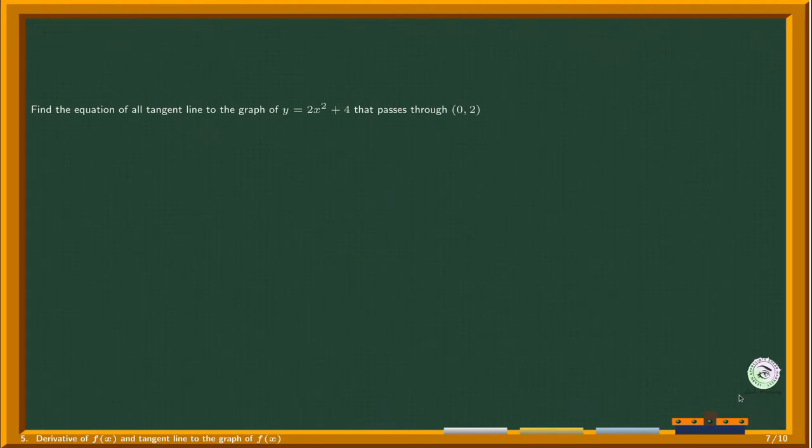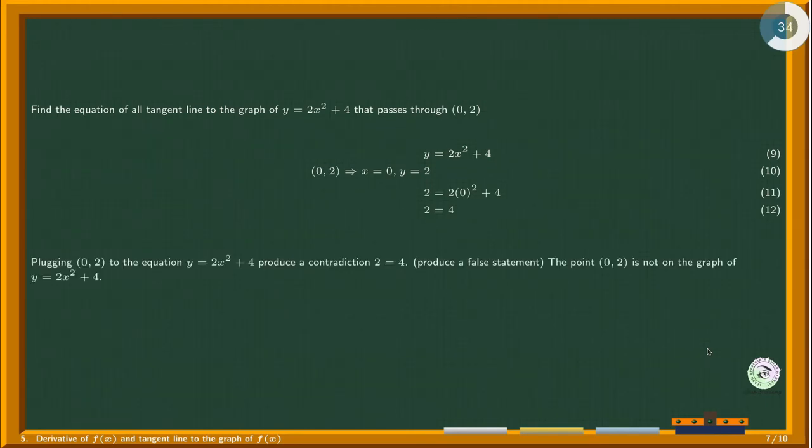Let's check it by plugging (0, 2) into the equation of the graph. Points on the graph have coordinates (x, y) that make the statement of the equation true. Plugging (0, 2) to the equation y equals 2x² plus 4 produces a false statement. The point (0, 2) is not on the graph of y equals 2x² plus 4.